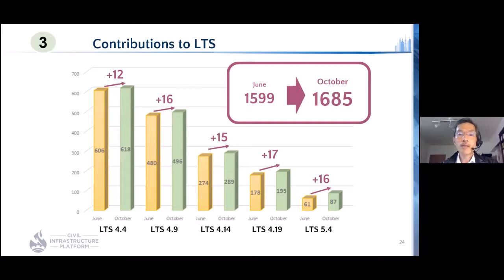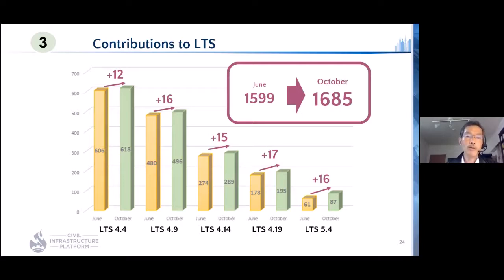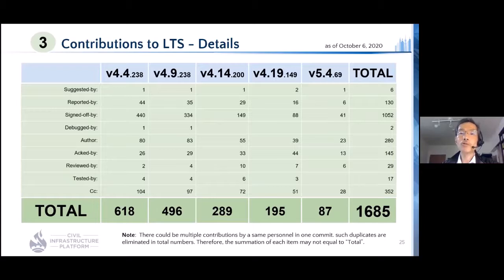These statistics show the counts of contributions by the CIP kernel team to stable releases. This was reported at ELC North America 2020 in June. Since then, the team has kept contributing to all stable releases. Compared with the June timeframe, the team added nearly 100 contributions in total. How we contribute is recorded in commit logs in stable releases — reported by, signed off by, acked by, in addition to authors and CCs — are major counts in the total of around 1,700.